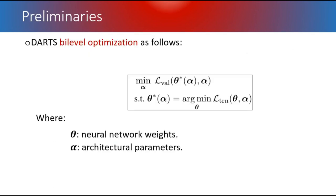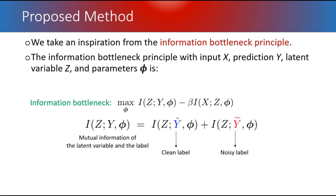As a preliminary, we have bi-level optimization where alpha is the neural architecture search parameter for each operator and theta is the neural network parameters. We take inspiration from the information bottleneck principle: the mutual information between z and y, which is the label, must be maximized, and with beta, the mutual information between x and z, where z is the latent variable and x is the input.